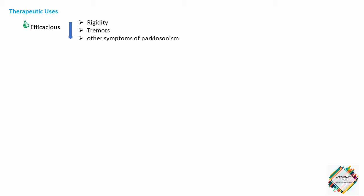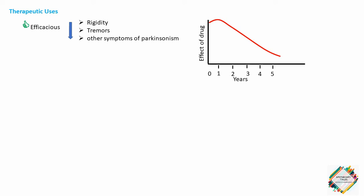What are the therapeutic uses of levodopa and carbidopa? Levodopa in combination with carbidopa is an efficacious drug regimen for the treatment of Parkinson's disease. It decreases rigidity, tremors and other symptoms of parkinsonism. In approximately two-thirds of patients with Parkinson's disease, levodopa and carbidopa substantially reduces the severity of symptoms for the first few years of treatment.